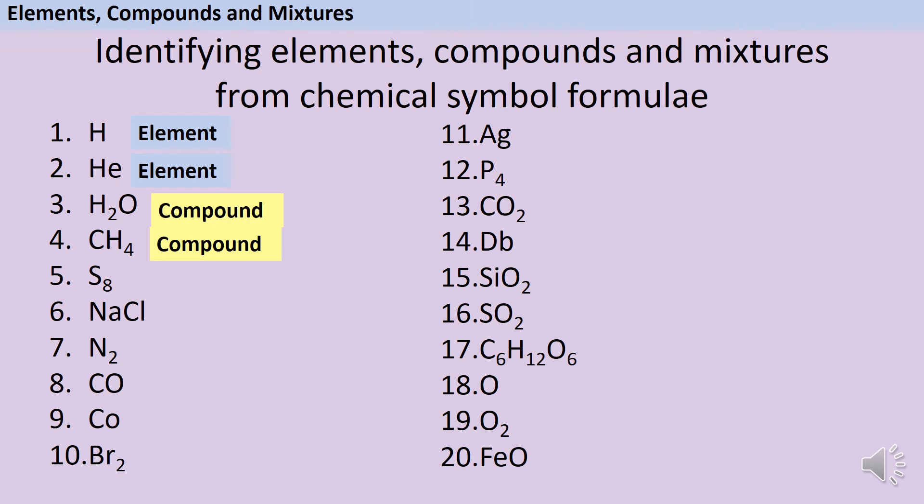The fifth one is sulfur. And this is an element. Lots of people start to get confused when they see the chemical symbol formula for elements, where there's more than one atom in a molecule. So what this chemical symbol formula means is that in a sulfur molecule, there are eight sulfur atoms joined together. But because those atoms are all the same type, this is still an element.